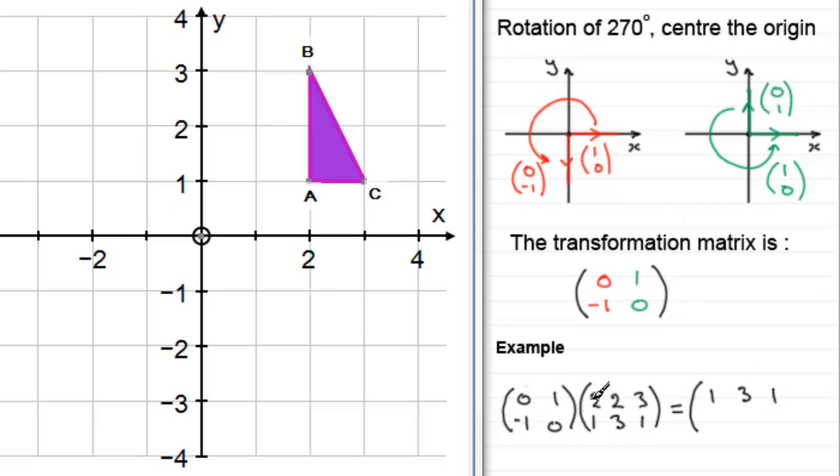And then when you do minus 1, 0, times 2, 1, and 2, 3, and 3, 1, what it does, it gives you the top row, but just negates them. So, that would be minus 2, minus 2, and minus 3. And this is the matrix that gives the image.